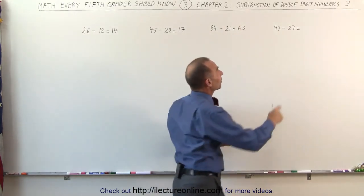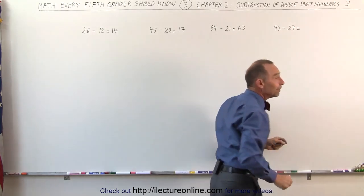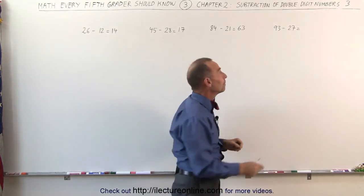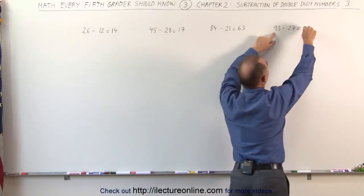But here I realize that the 7 is bigger than the 3, which means instead of subtracting 27, I'm going to subtract 30. 93 minus 30. 90 minus 30 is 60. So I get 63.